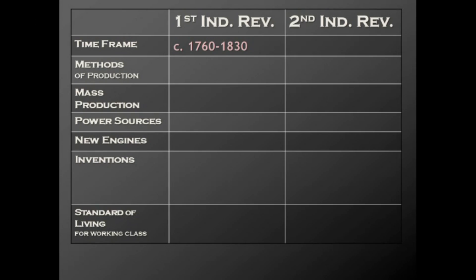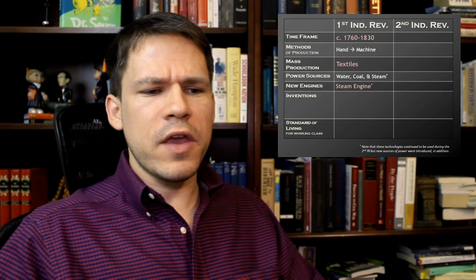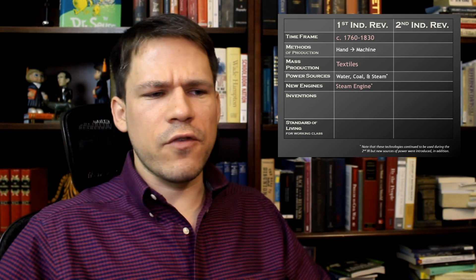Let's go over a little review of the first Industrial Revolution, which happened from about 1760 to 1830. The methods of production involve moving from hand production to machine-powered production, and as far as what's being mass-produced we're talking textiles. Power sources are water, coal, and steam. We see in the first Industrial Revolution the invention of the steam engine by James Watt.